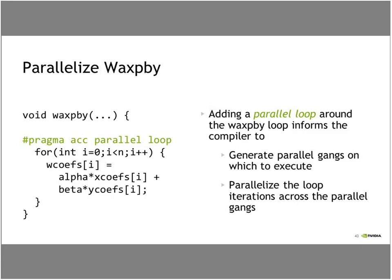So all I've done is add my pragma ACC parallel loop over the top of my existing for loop. In one line I've told the compiler: first, generate parallel gangs — that's what 'parallel' means — and then take this for loop and distribute it across those parallel gangs. In the most simple cases, that's really all that's required.